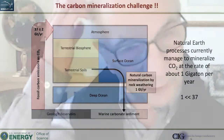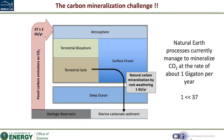So let me start with this perspective — this is kind of the challenge with mineralization. We're currently putting CO2 into the atmosphere at about 37 gigatons per year. This diagram comes from a paper I did a few years ago. We're just dumping it into this upper box representing the atmosphere, biosphere, soils, and the surface ocean. The only output back to the geologic reservoirs is natural carbon mineralization by rock weathering, and that's estimated to be about one gigaton per year.